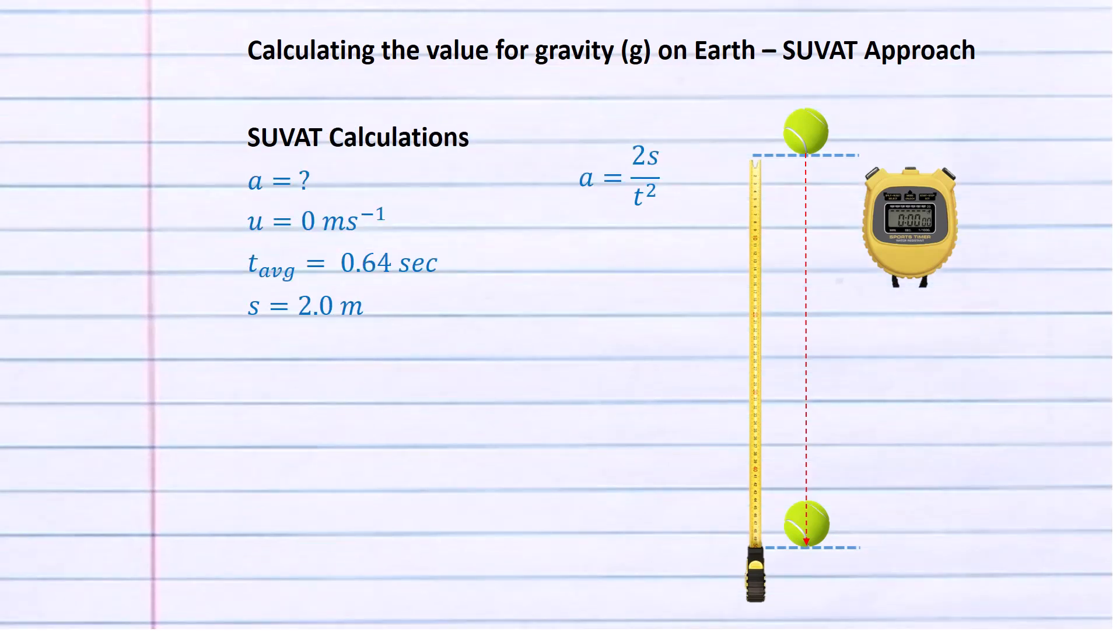All that's left to do now is substitute in the values for our known variables. A is the unknown acceleration. U equals zero meters per second. T the average time is 0.64 seconds. S displacement is 2.0 meters. We substitute these values into our equation of A equals 2S over T squared. The acceleration of this falling object based upon its displacement of two meters and its average time of 0.64 seconds is 9.77 meters per second per second.